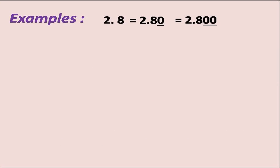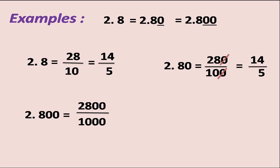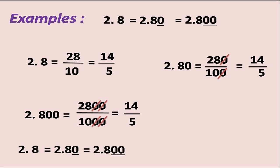I will explain one more example. 2.8 is equal to 2.80, which is equal to 2.800. 2.8 can be written as 28 by 10, which equals 14 by 5. 2.80 can be written as 280 by 100. Here the zeros cancel out, giving 14 by 5. So 2.8, 2.80, and 2.800 are all equivalent decimals.